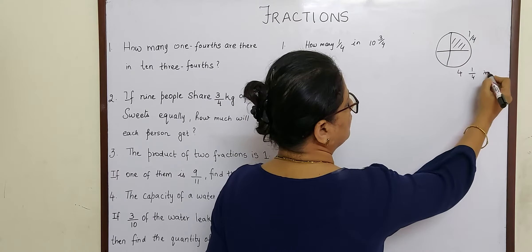Hope you understood, children. Let us go to the next problem. If nine people share three-fourths kg of sweets equally, that means nine people are sharing three-fourths kg of sweets. How much will each person get? Now here, they have given information about nine people and asked how much will one person get. So this is a case of division. But if you have a doubt whether it is multiplication or division, let us see how to do this.